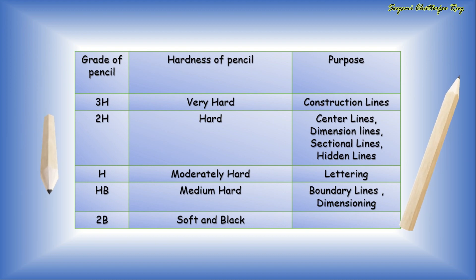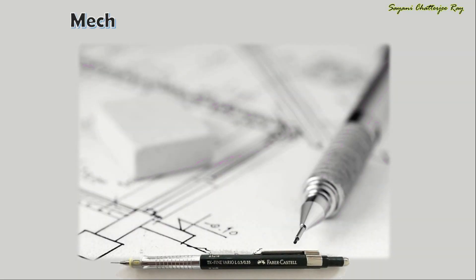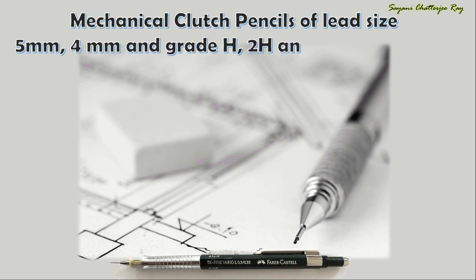H and HB pencils are a better option for lettering and dimensioning purposes, and in case you want to draw any freehand sketches where considerable erasing is required, soft grade pencils like HB can be used. Instead of wooden pencils, you can also use mechanical clutch pencils with different lead sizes like 0.5mm, 0.4mm and grades like H, 2H, HB. A great advantage of using mechanical clutch pencils is that sharpening is not required.